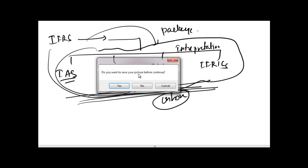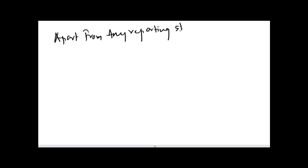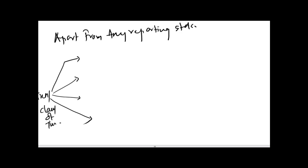Apart from reporting standards — such as IFRS 7 on financial instruments disclosures, IFRS 8 on segment reporting, or IAS 34 on interim financial reporting — a general standard provides guidance regarding four major areas in respect of particular transactions or classes of transactions.